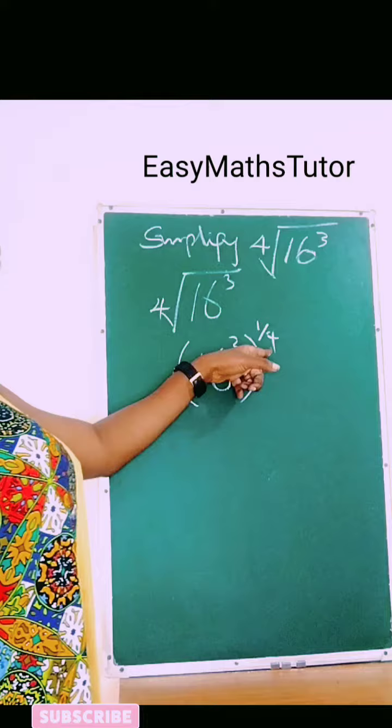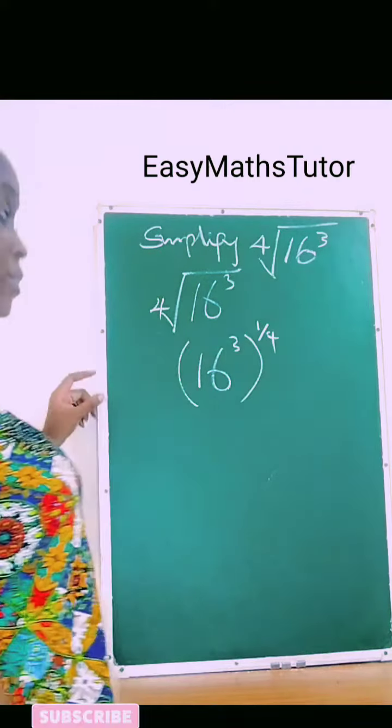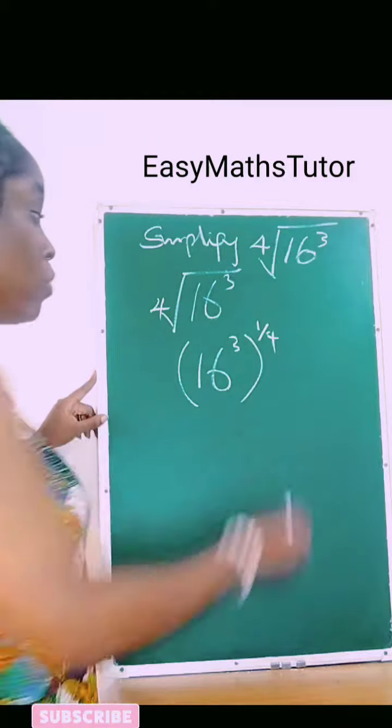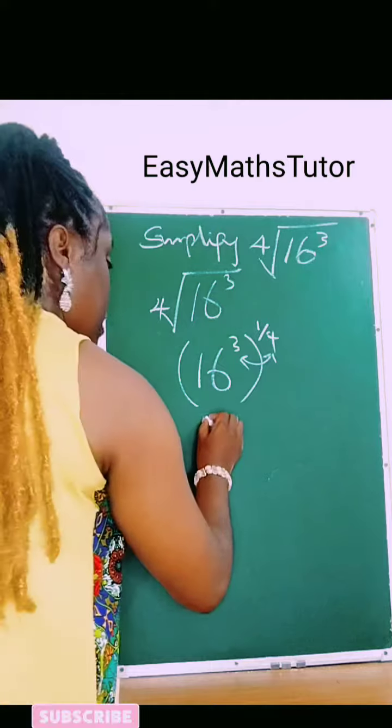1 over 4 is the same thing as the fourth root of any number. So we're going to apply the bracket law, which is to multiply the two powers across the bracket.